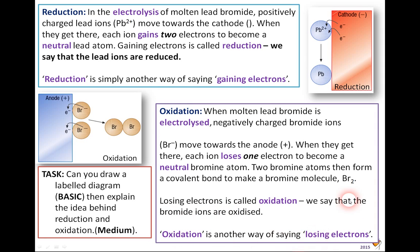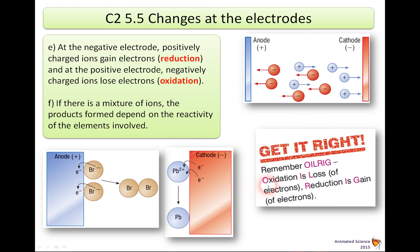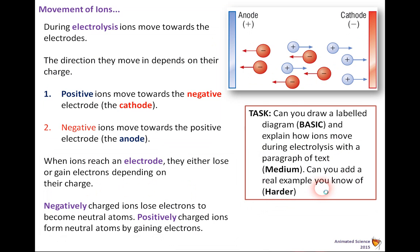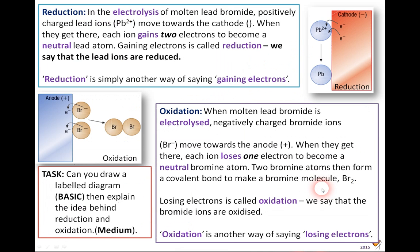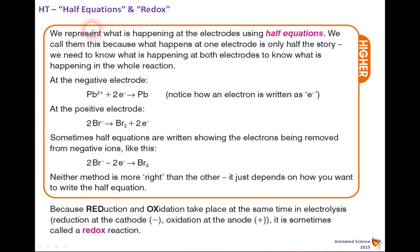Oxidation is another way of saying losing electrons. Remember: OIL RIG — oxidation is loss of electrons, reduction is gain. Now, for higher tier, we look at half equations and redox.